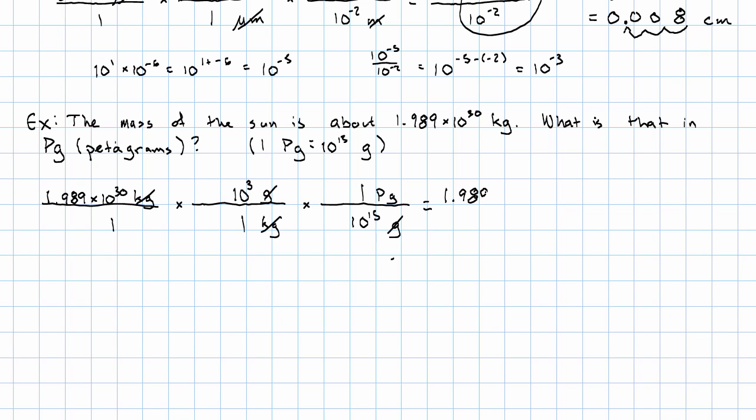1.989 times 10 to the 30th times 10 to the 3rd over 10 to the 15th petagrams. So let's see. 10 to the 30th times 10 to the 3rd is 10 to the 33rd, right? Adding together the exponents. 10 to the 33rd over 10 to the 15th is 10 to the 33 minus 15. That'll be 10 to the 18th. So I'll have 1.989 times 10 to the 18th petagrams.